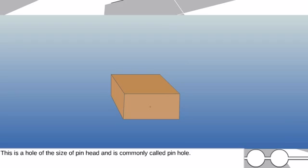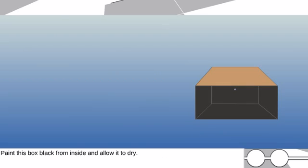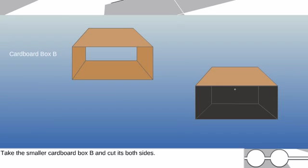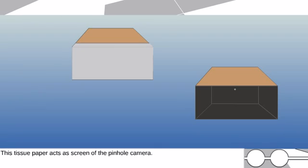This is a hole of the size of pinhead and is commonly called pinhole. Paint this box black from inside and allow it to dry. Take the smaller cardboard box B and cut both sides. On its one side, fix a tissue paper with the help of adhesive gum.